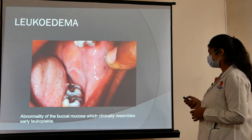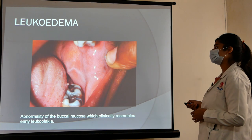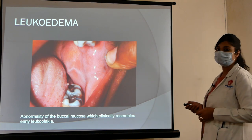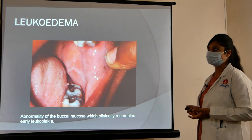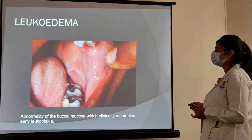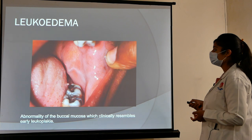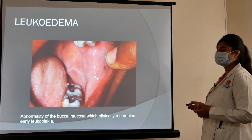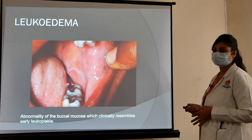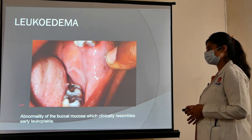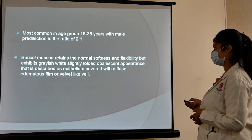Leukoedema gives the appearance of early leukoplakia. The key distinguishing feature is that when the buccal mucosa is stretched, leukoedema disappears, whereas leukoplakia does not disappear when the mucosa is stretched. Leukoedema is an abnormality of the buccal mucosa that clinically resembles early leukoplakia.